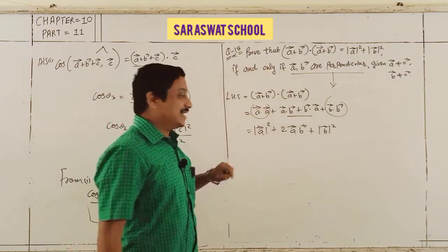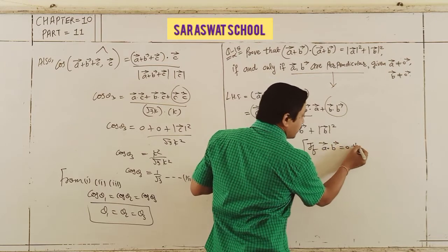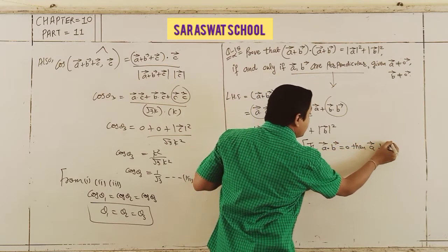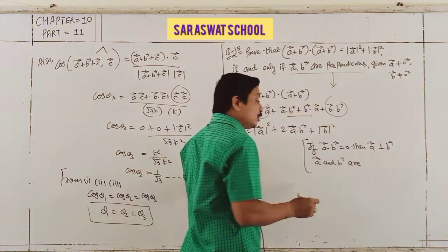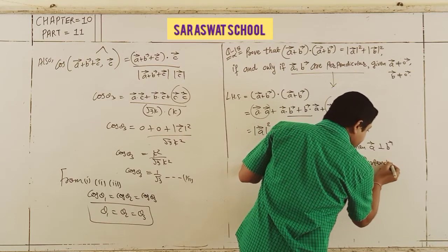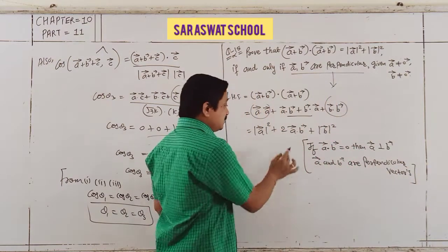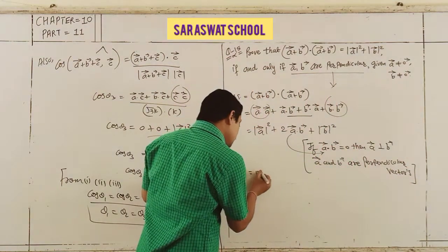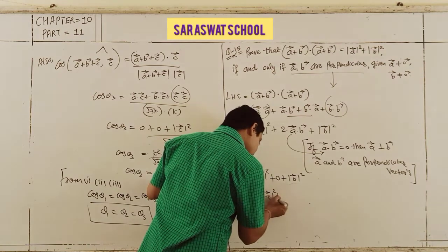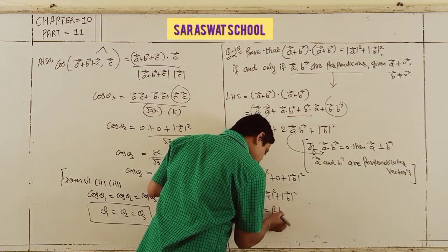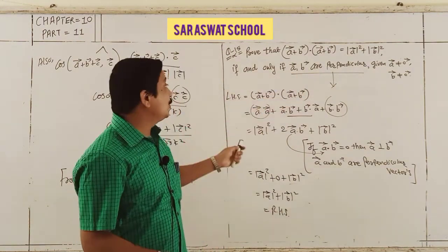LHS: (A + B)·(A + B). Applying distributive property: A·A + A·B + B·A + B·B = |A|² + 2(A·B) + |B|². If A·B = 0 — meaning A is perpendicular to B — then this reduces to |A|² + |B|², which equals the RHS.